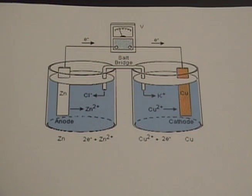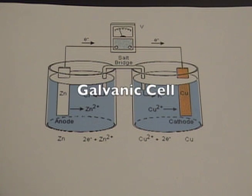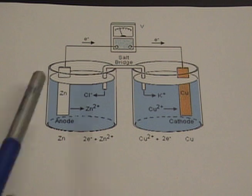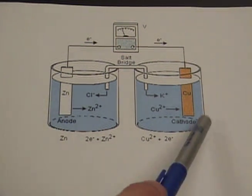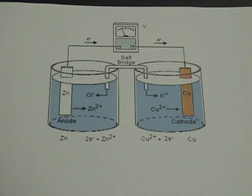Let's see what that looks like. This diagram is the rough version of a battery called a galvanic cell. It consists of two different metals inside their respective aqueous states. There is also a wire connecting the two metals, as well as a salt bridge, which we will discuss later.